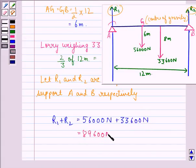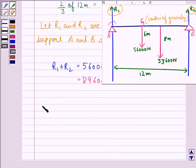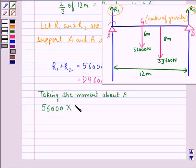Taking the moment about point A, we have 56,000 Newton times 6 plus 33,600 Newton times 8 equals R2 times 12.